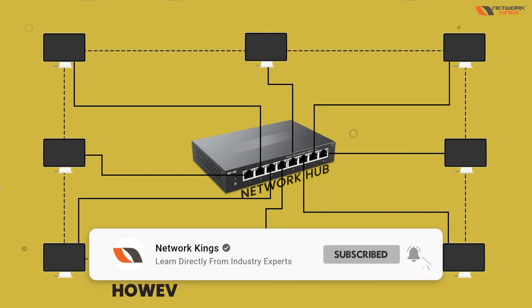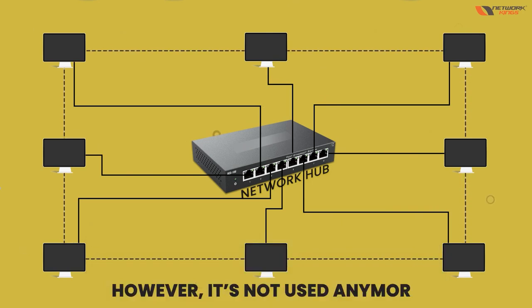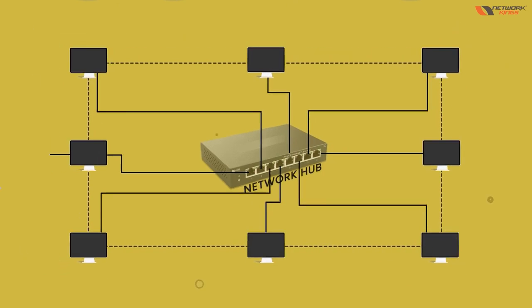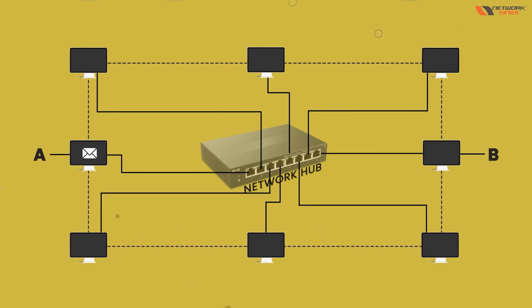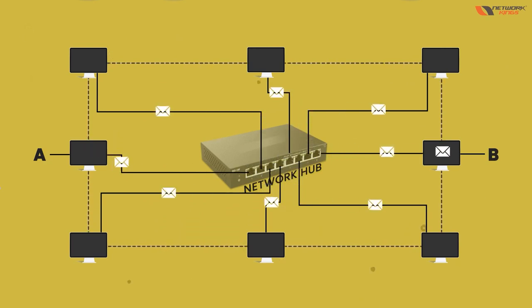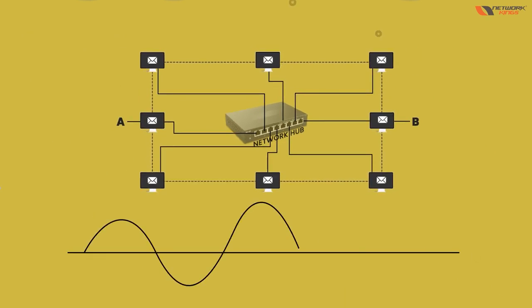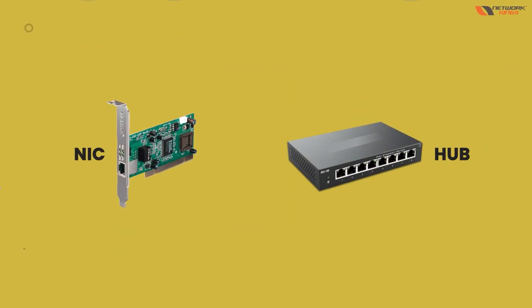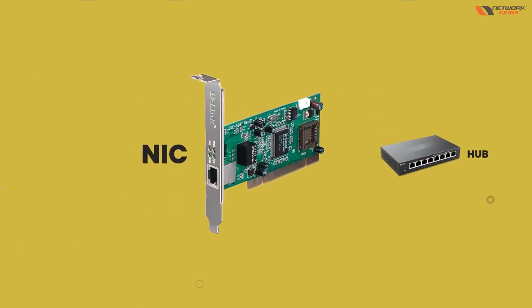Hub is not used anymore because if you send data, it goes to all computers together. This is what we call broadcast — if you send data to everyone, that is called broadcast. It's a problem because bandwidth utilization goes high. So these are the two devices we covered: NIC and hub.